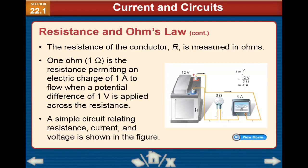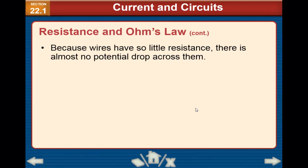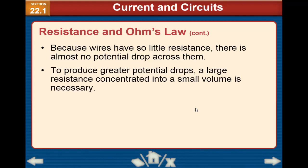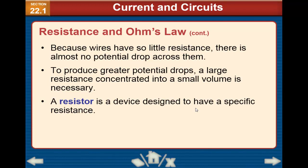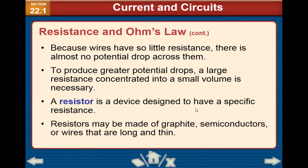A simple circuit relating resistance, current, and voltage is shown in the figure. Because wires have so little resistance, there is almost no potential drop across them. To produce greater potential drops, a large resistance concentrated into a small volume is necessary. A resistor is a device designed to have a specific resistance. Resistors may be made of graphite, semiconductors, or wires that are long and thin.